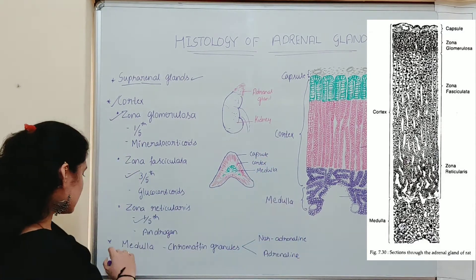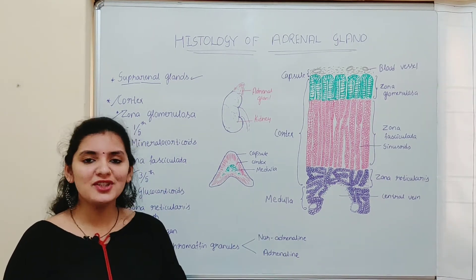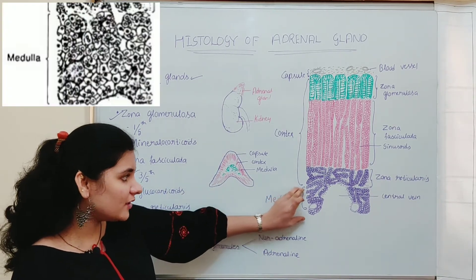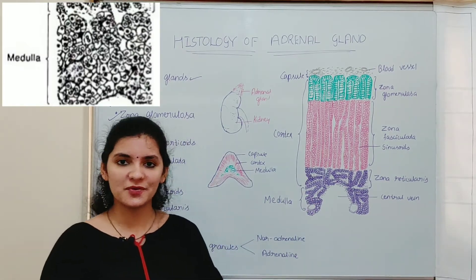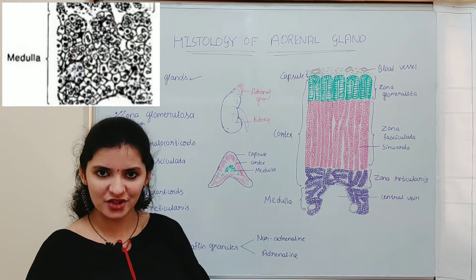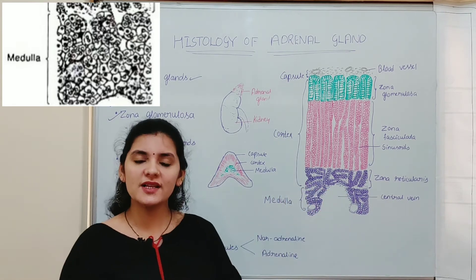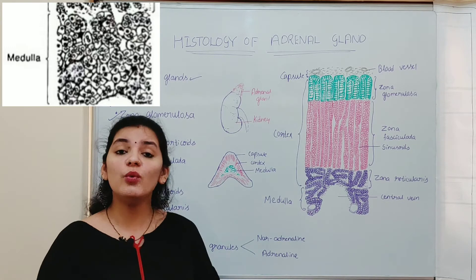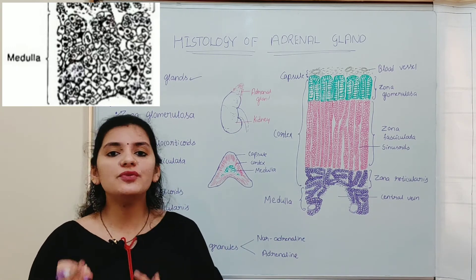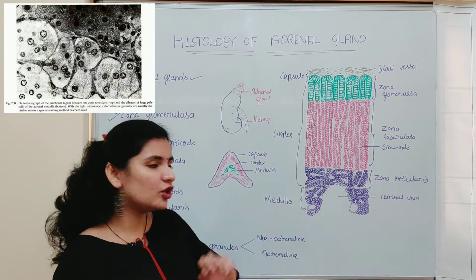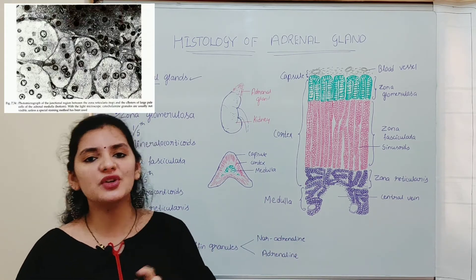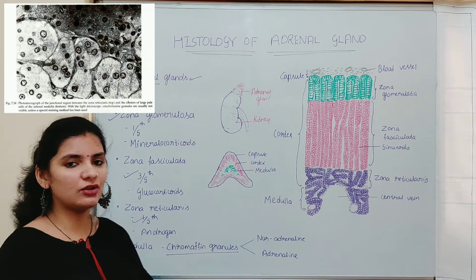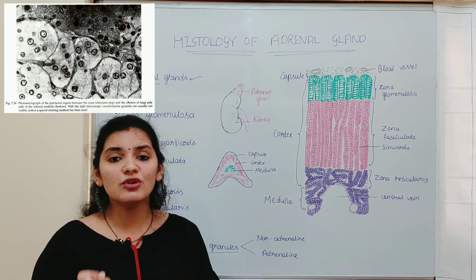The next region is the medulla, also called the suprarenal medulla, which is the innermost region of the adrenal gland. The medulla is made up of cords or columns of polyhedral or cuboidal cells arranged in acinus groups, with sinusoids found in between. Some of these cells have specialized granules called chromaffin granules, and those cells are called chromaffin cells.